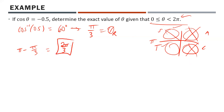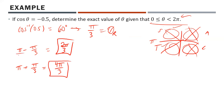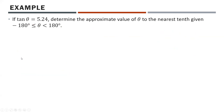So one answer is 2 pi over 3. For quadrant 3, we're going over pi, so we go pi plus pi over 3. Remember, to add fractions you need a common denominator — think of pi as 3 pi over 3 — so pi plus pi over 3 equals 4 pi over 3. Those are our two answers.